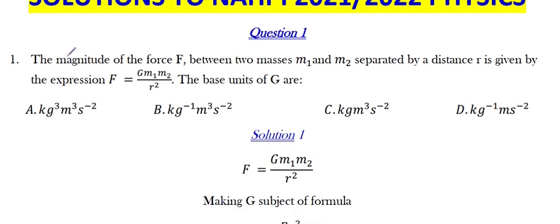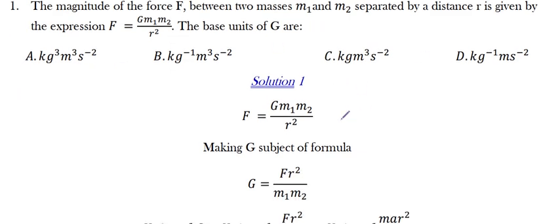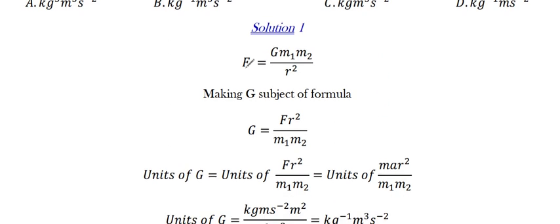Question 1 reads: the magnitude of the force F between two masses M1 and M2 separated by distance R is given by the expression F equals G M1 M2 divided by R squared. The base units of G are — you are given options A, B, C, and D. Let's move straight into the solution.